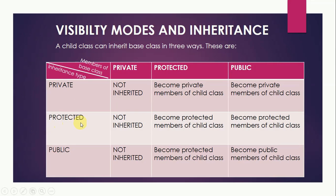Now let us talk about protected inheritance. In protected type of inheritance, private members of the base class are not inherited. However, the protected members become the protected members of the child class and public members also become the protected members of the child class. That is, in protected inheritance, private members of the base class are not inherited and protected and public members of the base class become protected members of the child class.